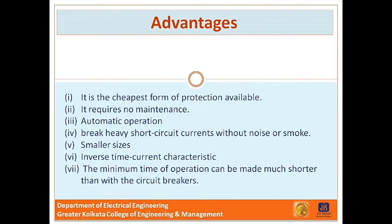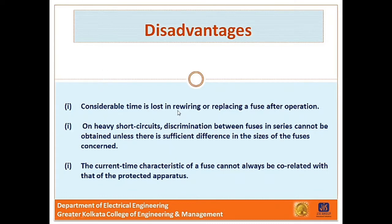But it has several disadvantages. First, considerable time is lost in rewiring or replacing a fuse after operation — whenever overload or short circuit occurs, we have to replace the fuse material, which is a problem. Second, on a heavy short circuit, discrimination between fuses in series cannot be obtained unless there is sufficient difference in the size of the fuses concerned. And last, the current-time characteristics of a fuse cannot always be correlated with that of the protected apparatus. Sometimes we need an instantaneous disconnecting device, but since a fuse has inverse characteristics, for small currents it takes a long time.